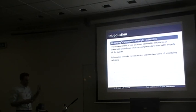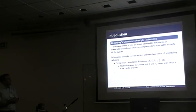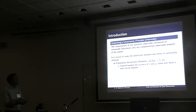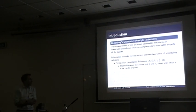It's crucial to draw a distinction between two different notions of uncertainty relations. The first type is preparation uncertainty relations — this probably corresponds to what you're most familiar with, the standard uncertainty relation. This says something about how accurately I can prepare a state with given values of position and momentum.